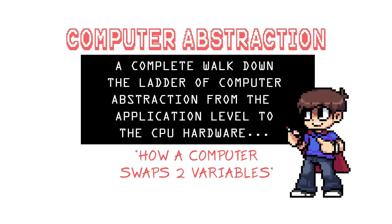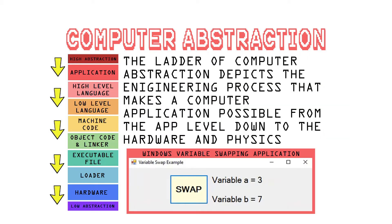In this video I'm going to try my best to take us through the steps of computer abstraction starting at the app level all the way down to the CPU hardware. Keep in mind different computers and processors have different hardware and architecture, and different programming languages and environments can have different steps like the Java virtual machine. My example is based on a 64-bit Windows application using a 64-bit CPU instruction set, but this shouldn't be too far off from what most computers are doing.